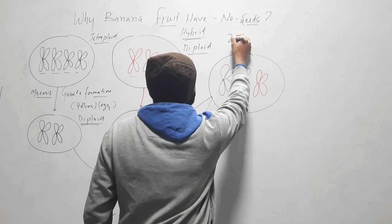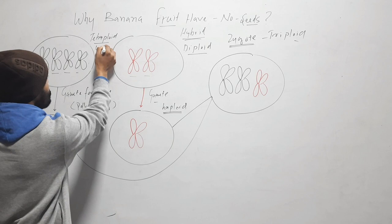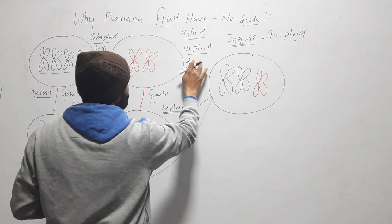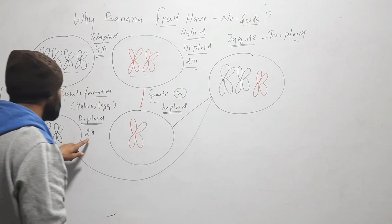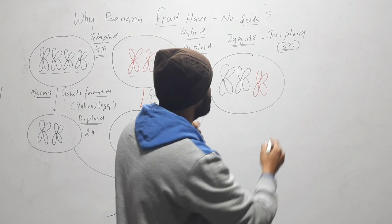The tetraploid parent (4x) produces diploid gametes (2n), and the diploid parent produces haploid gametes (n). When we fuse 2n and n, we get 3n — that is triploid. So the banana that we are eating is triploid.